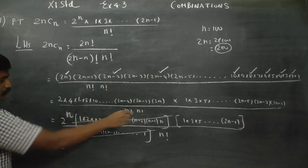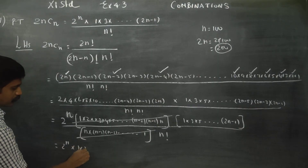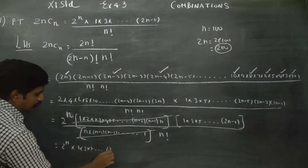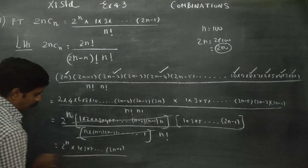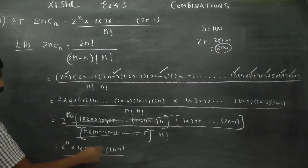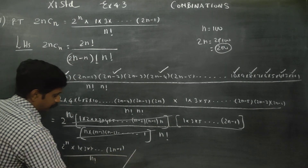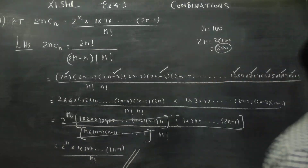So the result is 2 power n into 1 into 3 into 5, dot dot dot, 2n minus 1, all divided by n factorial. This is your proof. Hence the RHS is proved.